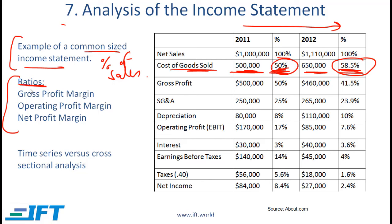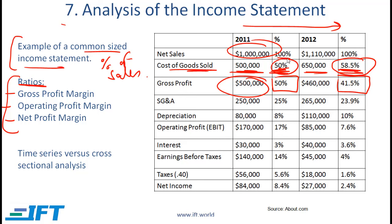Some of the most important ratios that you can extract from the income statement are gross profit margin, operating profit margin, and net profit margin. Gross profit margin is equal to gross profit divided by sales, and notice that that number is also given in the common-sized income statement. Gross profit divided by sales is 50% in 2011, and gross profit divided by sales for 2012 is 41.5%. So it looks like the gross profit is going down, which makes sense given that the cost of goods sold is going up.